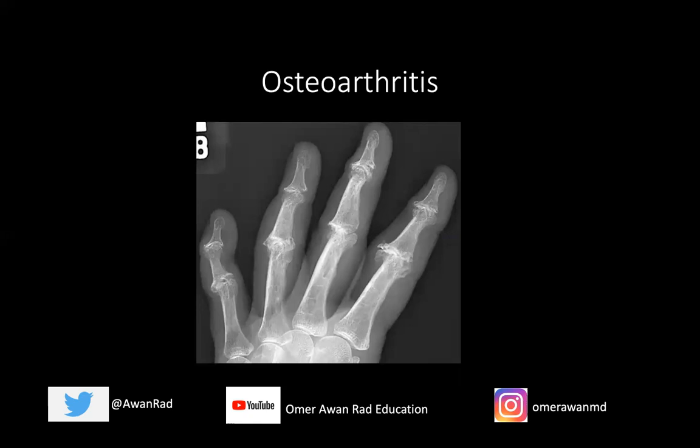Let's take a look at a hand. I want to focus at this MCP joint, which is more or less normal. We see a nice joint space, we don't see osteophytes, we don't see subchondral sclerosis or cystic change.